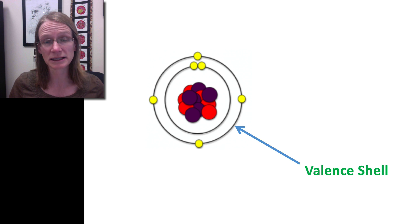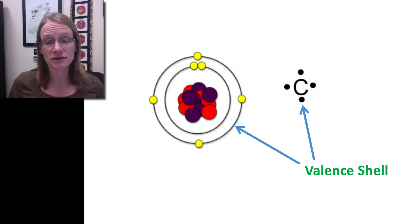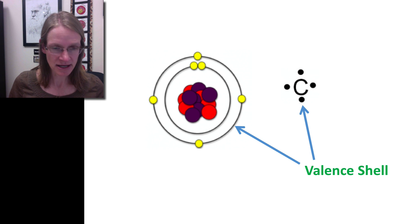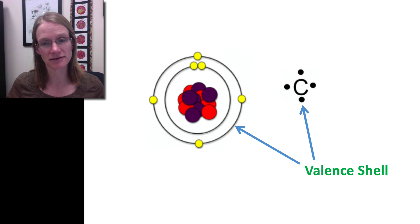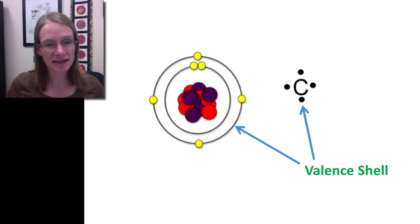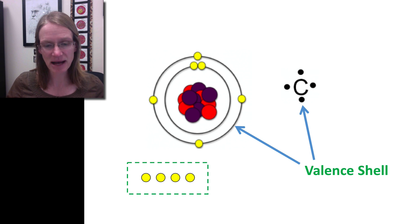The valence shell has a specific name because it's really important — it's what actually interacts with other things. It's also always indicated with the Lewis structure. From our octet rule, the inner shell can hold a maximum of two electrons, and all subsequent shells need to hold eight. With carbon, we can clearly see that it already has four in its valence shell, which means it just needs four more. So we need to ask where those four are going to come from.